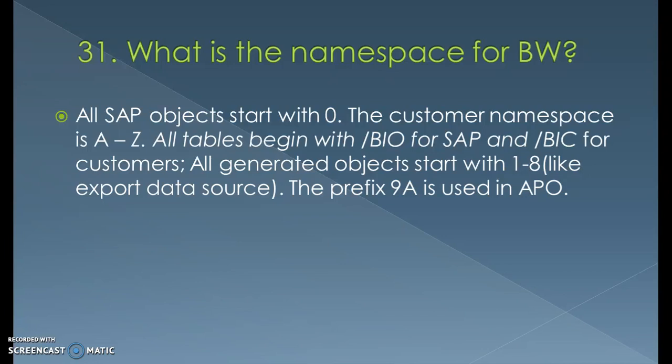The customer namespace starts with A to Z — you can start any object with any alphabet from A to Z. All tables begin with /BIO for SAP and /BIC for the customer. If there is an SAP standard cube, the tables behind it start with /BIO. For customized cubes or DSOs, the backend tables are generated with /BIC.